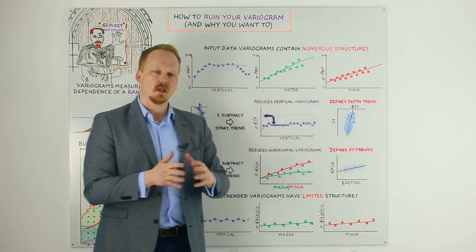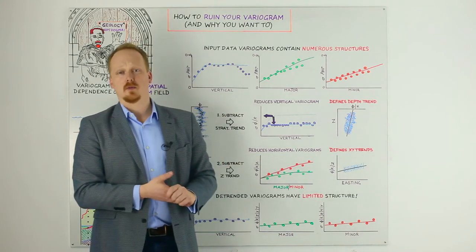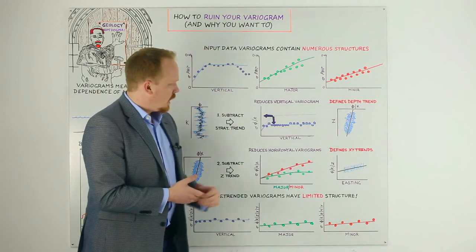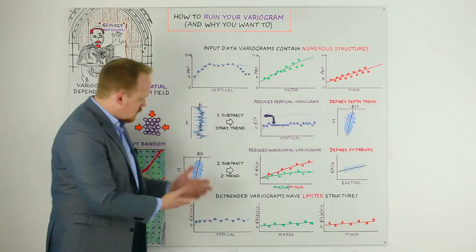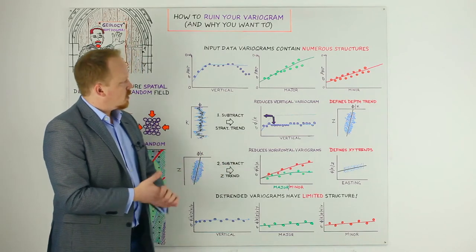you start to see the second and third order effects that might not have been obvious in the raw data sets. In this case, it really tightened up our observation of the depth trend. And we can subtract that next. Take that trend out because it's not random and see what it does to our variograms.